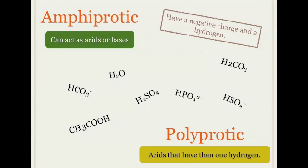Moving on. You have some substances which are amphiprotic, and these guys can act as acids or bases. They can either donate hydrogen or accept hydrogen. And you have things which are polyprotic, which means they're acids that have more than one hydrogen, so they can give off more than one proton.